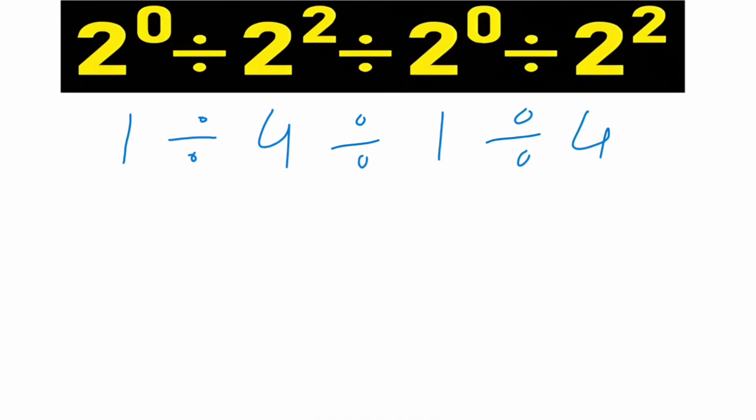First, 1 divided by 4, so this is equal to 1 over 4. Then divide 1 divided by 4, so this is equal to 1 by 4. Then 1 by 4 divided by 1 by 4, so this is equal to 1.